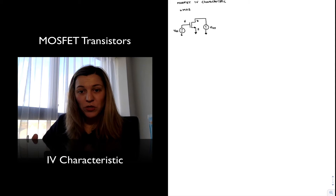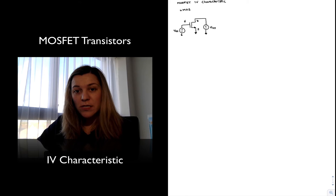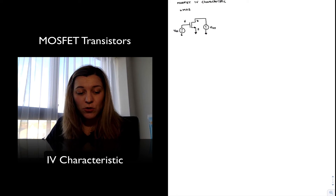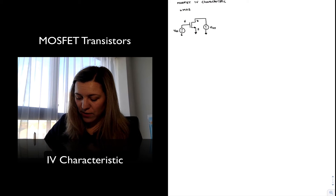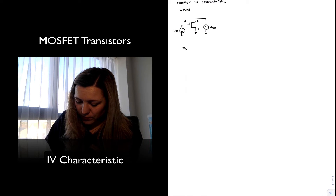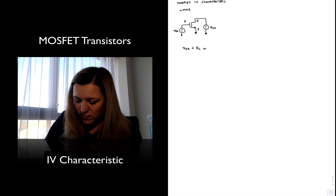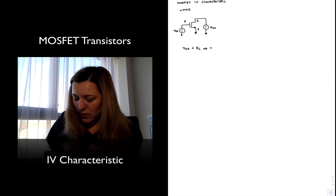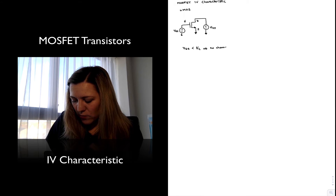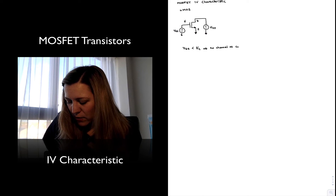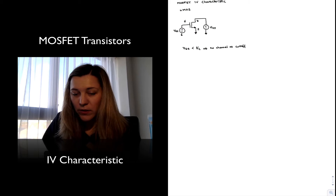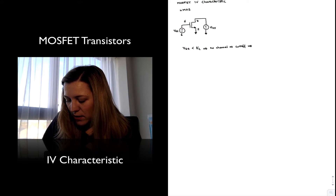The first thing to note is that as long as the gate voltage remains below the threshold voltage, there's going to be no conduction. So for VGS less than the threshold voltage VT, there is no channel. The transistor is in cutoff — that's what we call the cutoff region — and in that case the current is simply equal to zero.